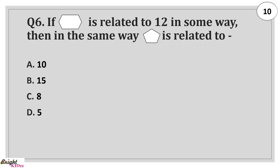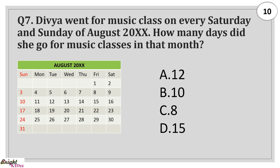If hexagon is related to 12 in some way, then in the same way, pentagon is related to? Answer: B 10.